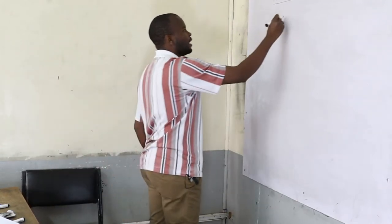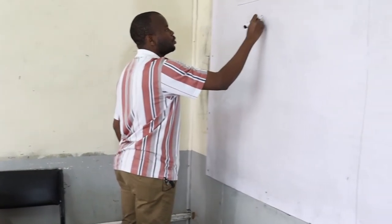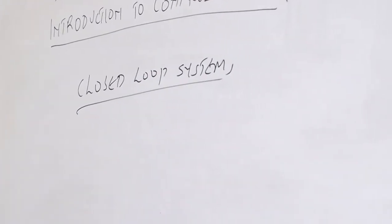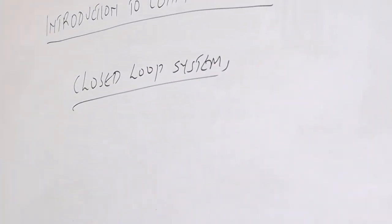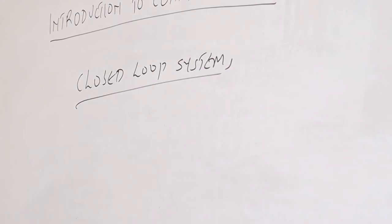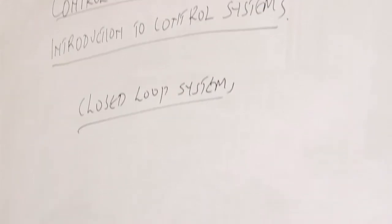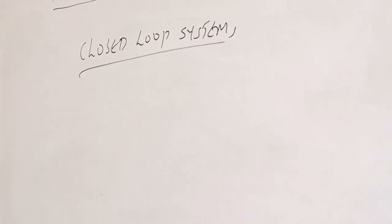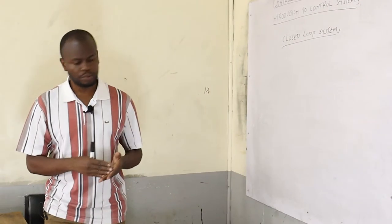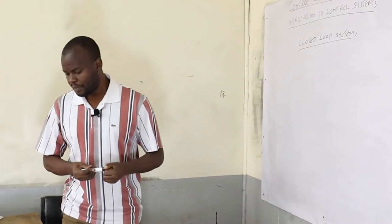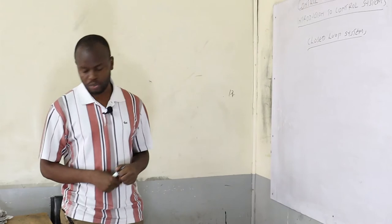We are going to look at closed loop systems. Unlike the open loop control system, the closed loop is one in which the control action depends also on the output or the desired results. In the open loop case, the control action was only dependent on the input, but in this case, both the input and output determine the output. We can represent it using a block diagram of a control system.